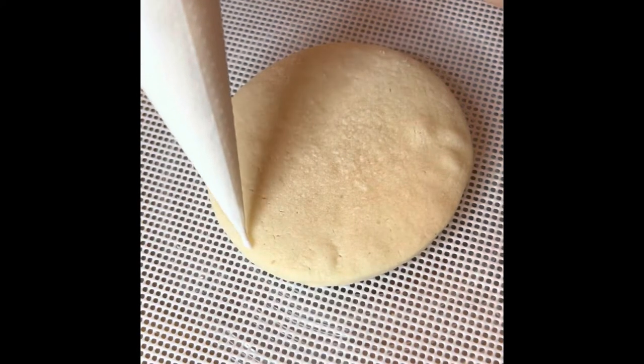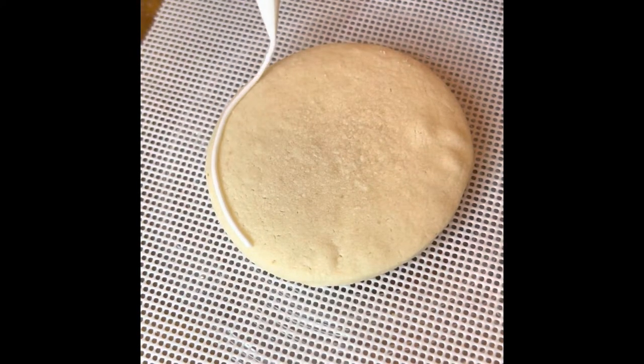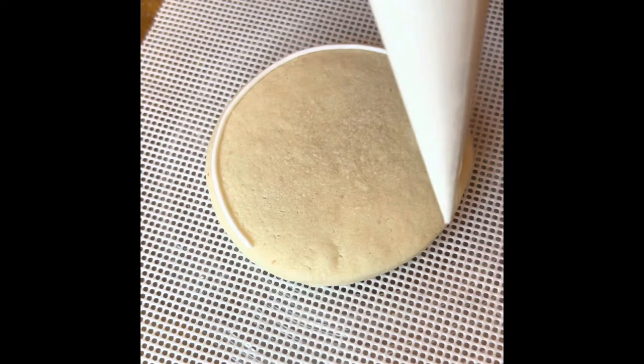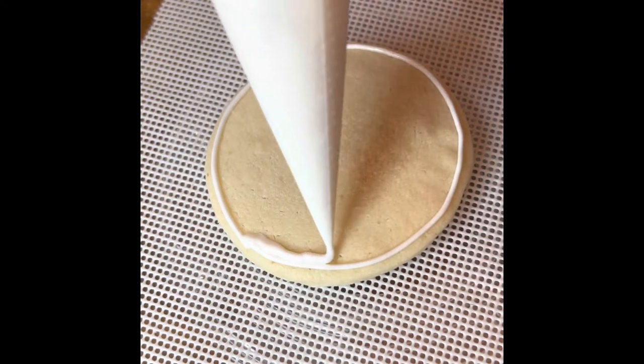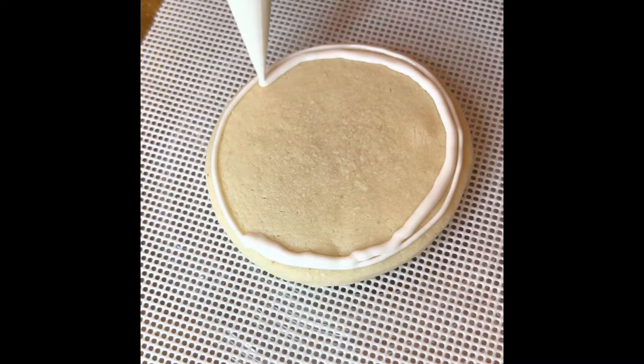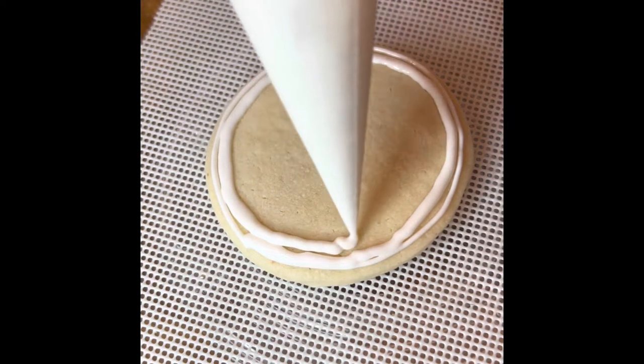Hey guys, so today we're going to work on making a baseball cookie. I'm just going in with pipe and flood consistency here, flooding in my circle to give that white background of the baseball. You're just going to go all the way around until you get it all flooded in.